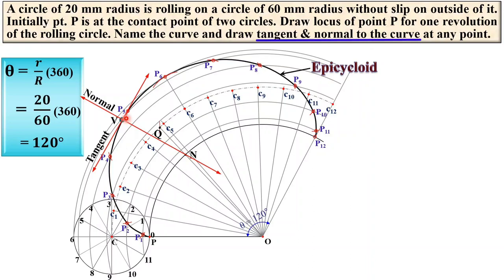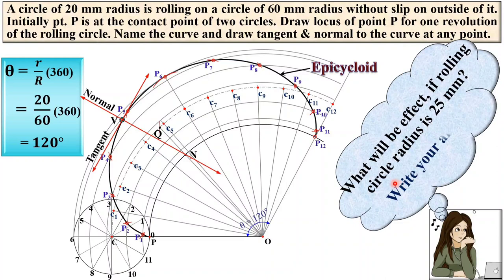At last, what will be the effect if the rolling circle radius is changed to 25 mm instead of 20 mm? Write your answer in the comment box. Thanks, my dear friends, for watching this video. Press the like button to appreciate it.